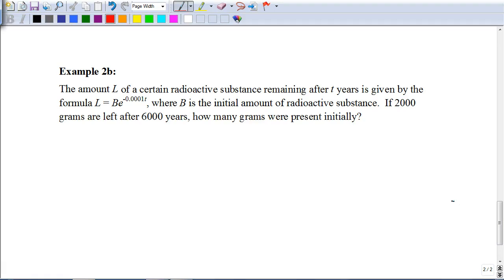It says the amount L of a certain radioactive substance remaining after T years is given by this formula, where B is the initial amount of radioactive substance. If 2,000 grams are left after 6,000 years, how many grams were present initially? So in other words, we're trying to figure out what B is. So go ahead and put in this information in the equation and solve it. So why don't you go ahead and pause the video and then hit play when you're ready to see how you did.